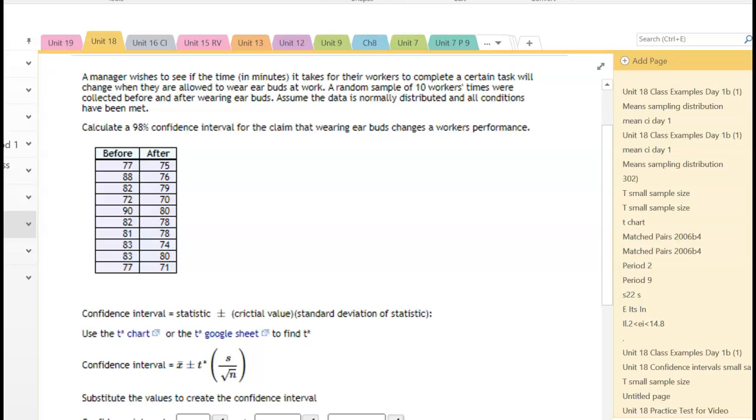A manager wishes to see if the time in minutes it takes for workers to complete a certain task will change when they are allowed to wear earbuds at work. A random sample of 10 workers' times were collected before and after wearing earbuds. Assume the data is normally distributed and all conditions have been met. So this is a matched pair.